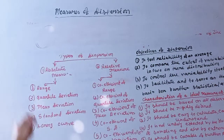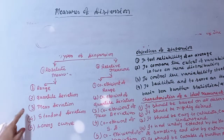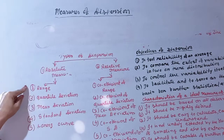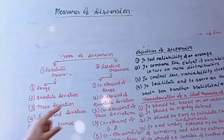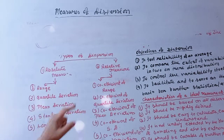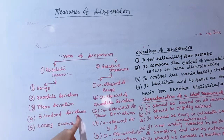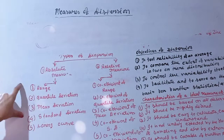The absolute measures of dispersion are: range, quartile deviation (also called interquartile range), mean deviation, standard deviation, and the Lorenz curve. In Hindi terminology these are also referred to as quartile deviation, mean deviation (gaur vishalan), standard deviation (pramanic vishalan), and the Lorenz curve.